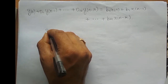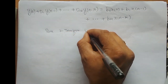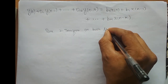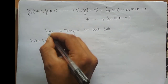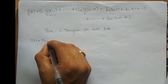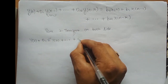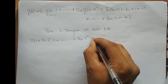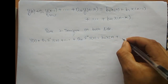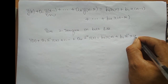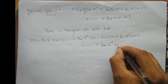Now I will take the Z-transform on both sides. Using the time-shift property, the Z-transform of Y(n−1) is Z⁻¹·Y(z). So we get: Y(z)·[1 + A1·Z⁻¹ + ··· + AN·Z⁻N] = X(z)·[B0 + B1·Z⁻¹ + ··· + Bm·Z⁻m].